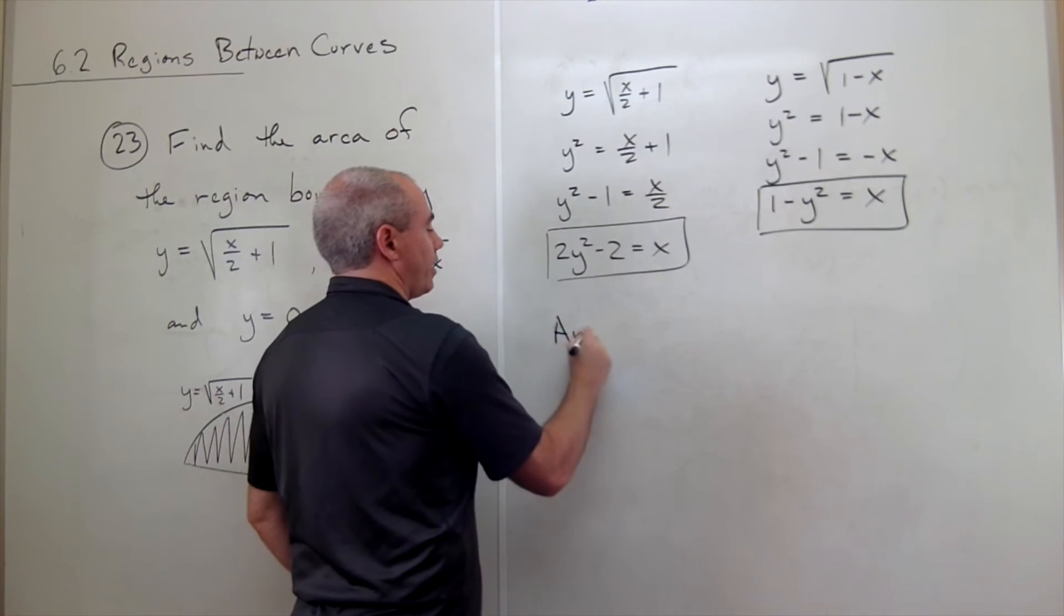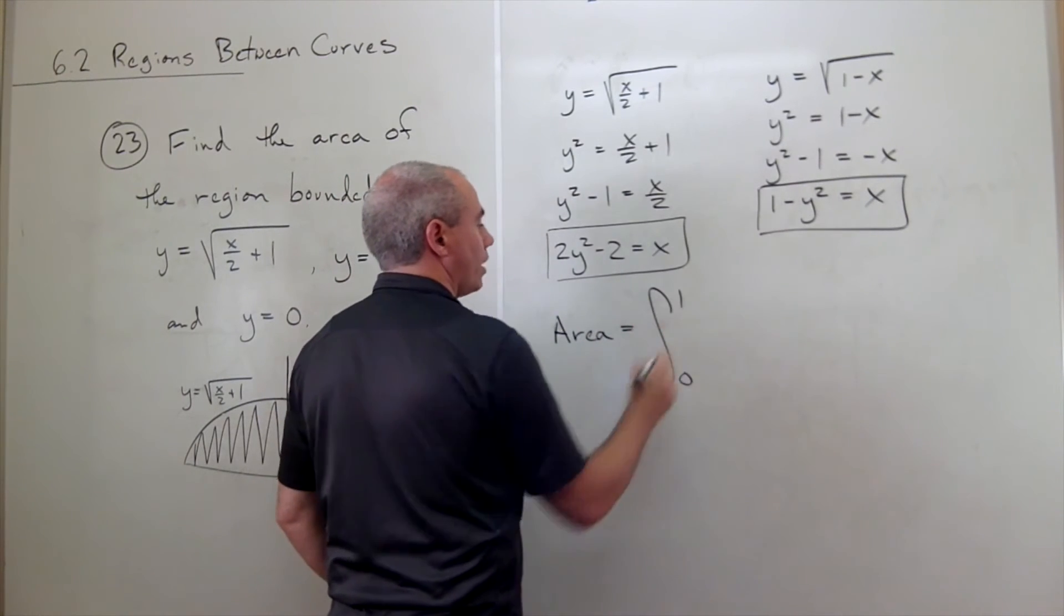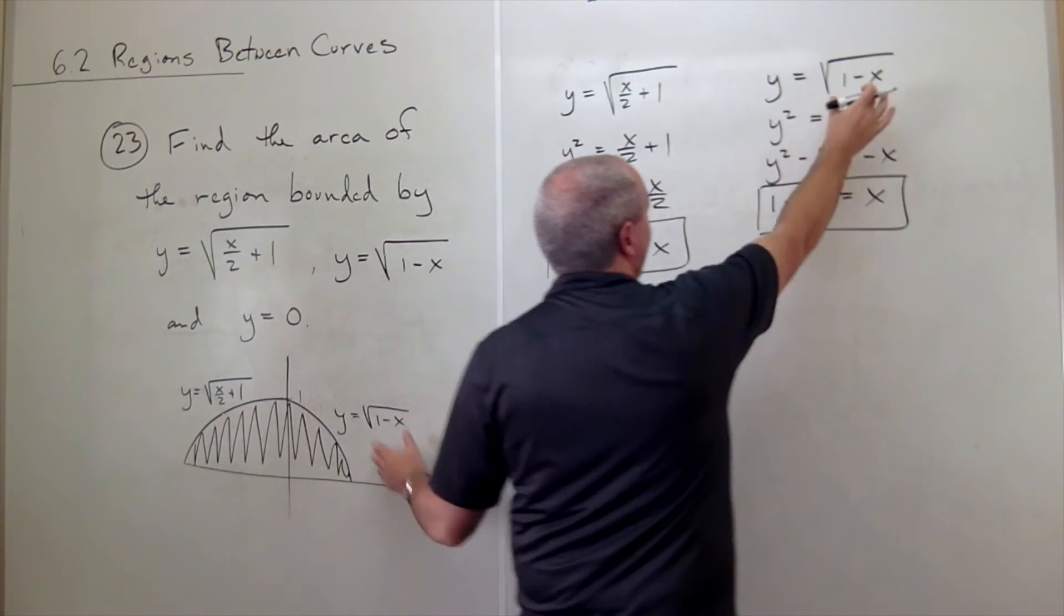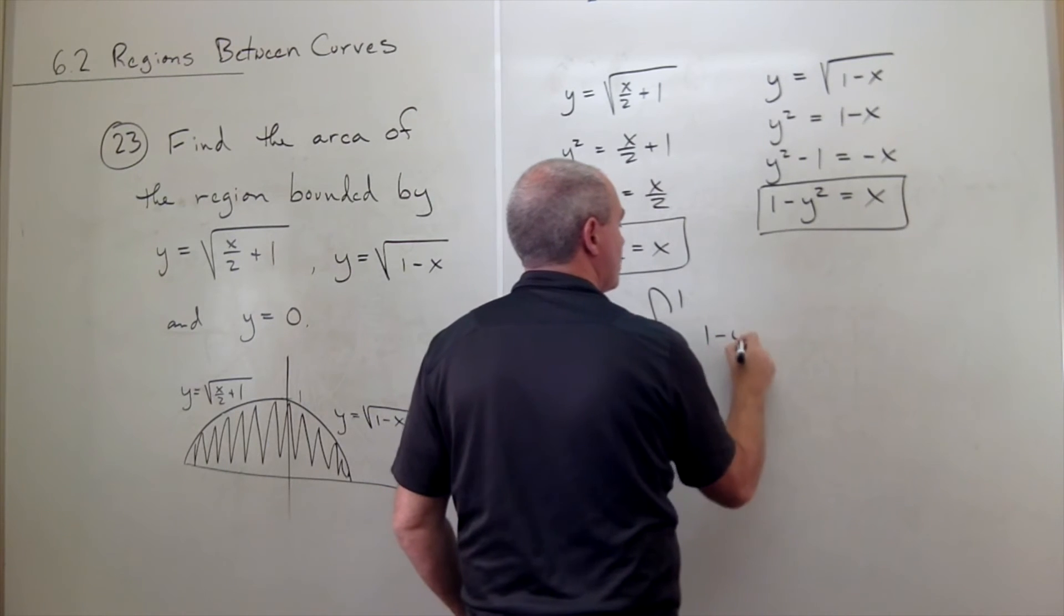So if I want to find my area, then I want to integrate from 0 to 1 of the top function, which is this guy. That's this one, but that written in terms of a function of y is 1 minus y squared,